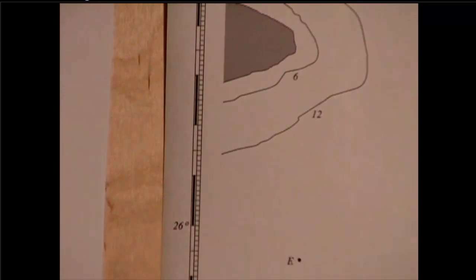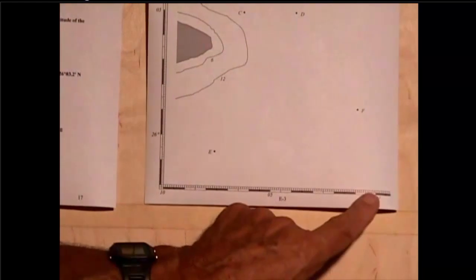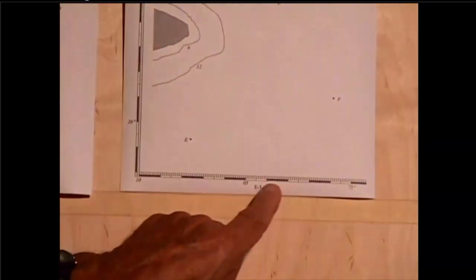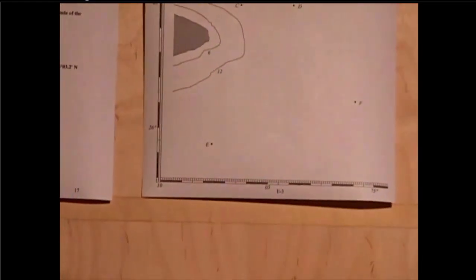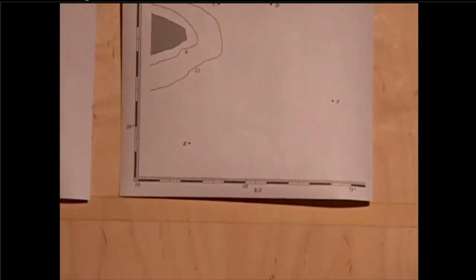The longitude is set up in a similar manner here, 75 degrees, 5 minutes, 10 minutes, and then there's major divisions or whole minutes, and each little tick is 1 tenth of a minute.